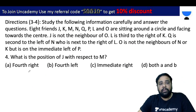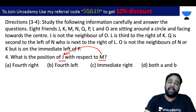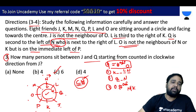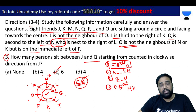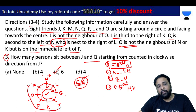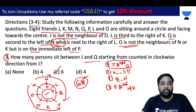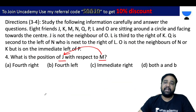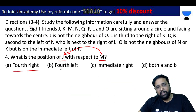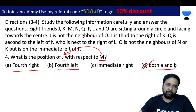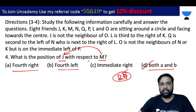Fourth question: What is the position of J with respect to M? M and J are at opposite positions. From M, J is at the 4th right. The left side of J is 4th left. So both options A and B — 4th right and 4th left — are correct. The answer is A and B only for problem number 4.